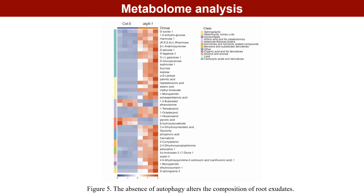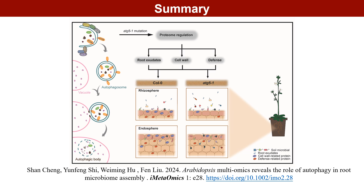Plant autophagy can transport intracellular materials for recycling. We speculated that the absence of autophagy may also affect the root microbiota by altering the composition of root exudates. The large number of metabolites enriched in ATG5-1 also demonstrated the role of autophagy in mediating microbiota colonization in roots through root exudates.